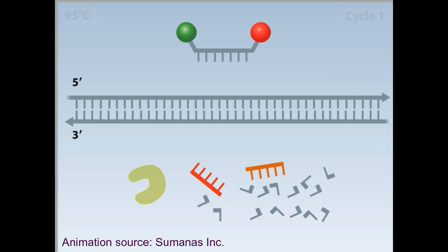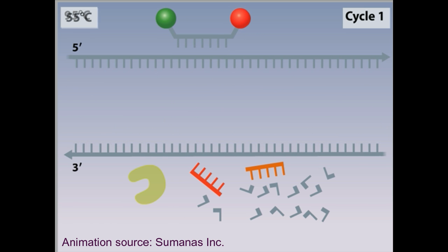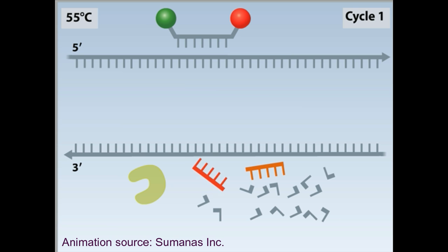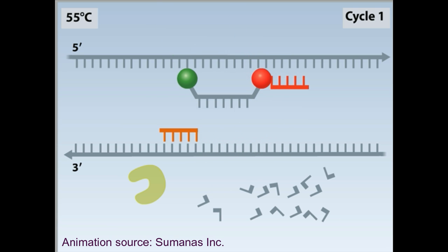The probe participates in the PCR cycles, which begin with the heat denaturation of the DNA. The temperature is then lowered, and the probe and primers anneal to the specific sequence on the DNA strands.